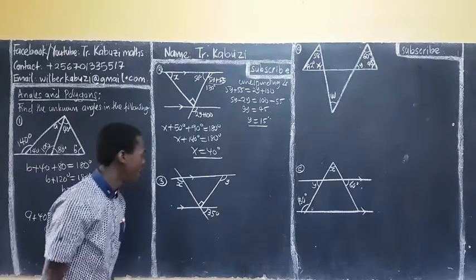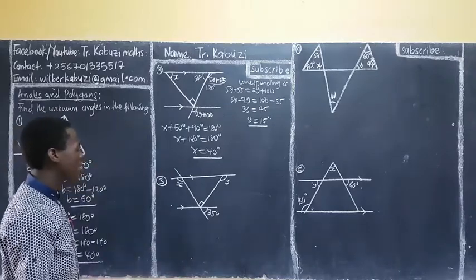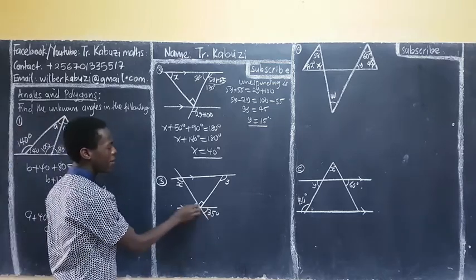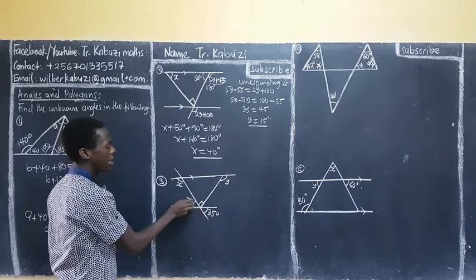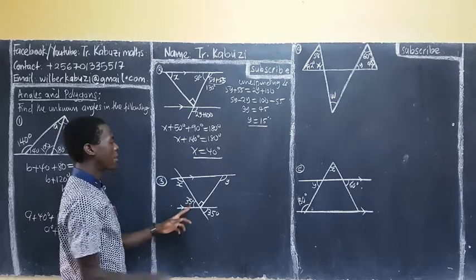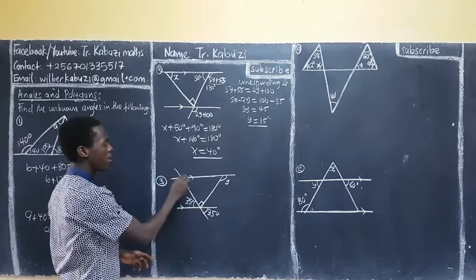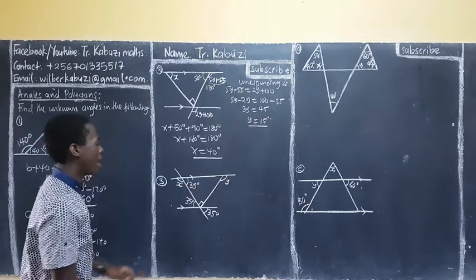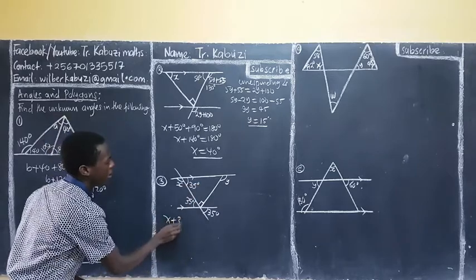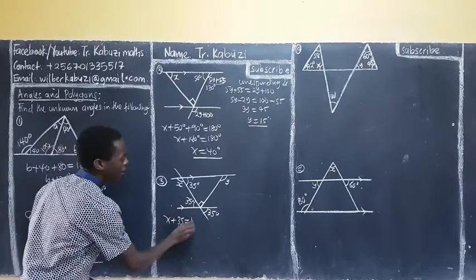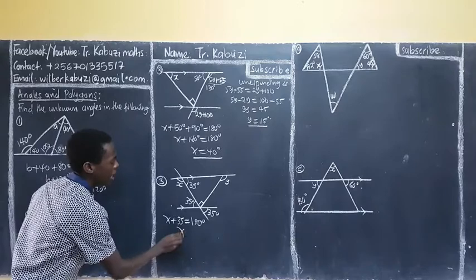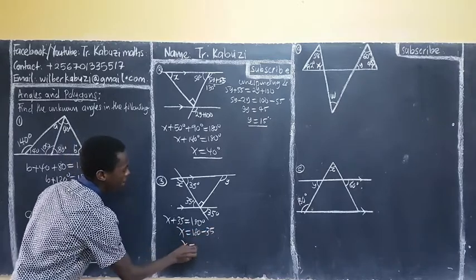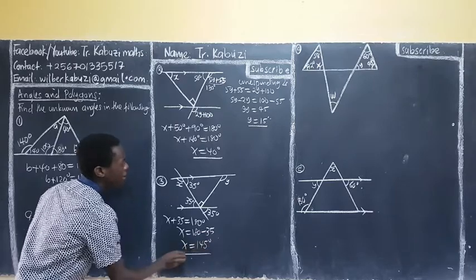Now, we have this one. How are we going to handle this? The first idea is that this one is vertically opposite angles, meaning that this one is also going to be 35 degrees. And if this is 35 degrees, it means that it's going to be alternating. This is alternating, meaning that this one is going to be 35 degrees. Meaning that now, my X and 35 are adding up to 180 because they are angles on a straight line. So, my X will be 180 minus 35 degrees. So, my X is going to be 145 degrees.